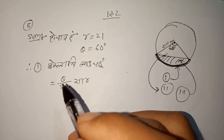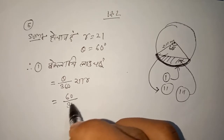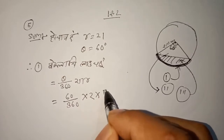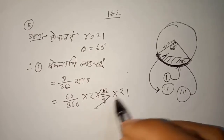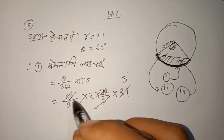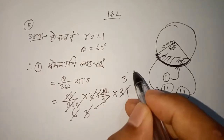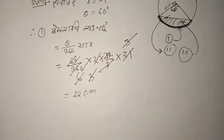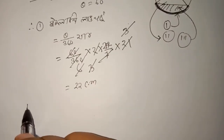Substituting theta equals 60 degrees over 360 degrees, times 2 times 22/7 times 21. After cancellation — 60 over 360 simplifies, and 21 cancels with 7 — the answer is 22 centimeters.